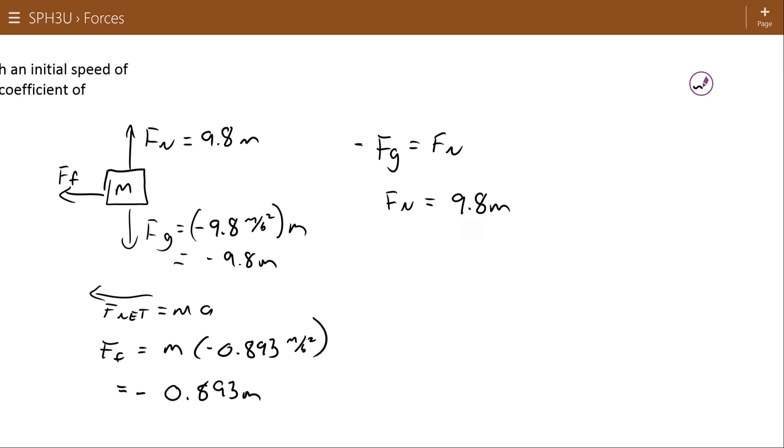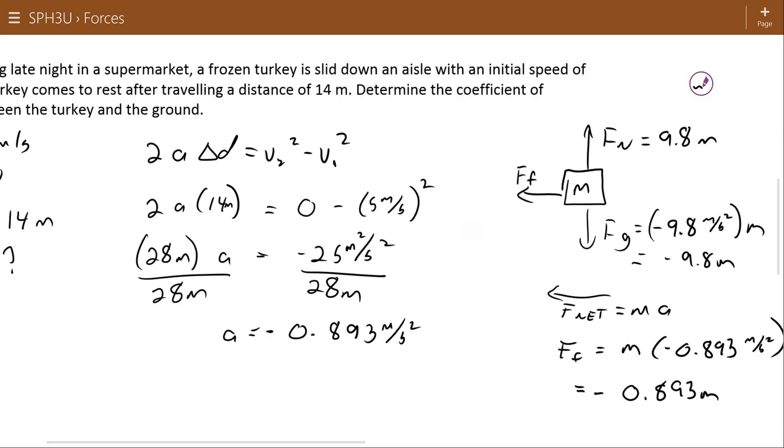With my normal force and my force of friction, I can now isolate for my coefficient of friction. Dividing both sides by 9.8, I get a coefficient of friction of 0.0911. Not surprising, that's why it took a whole 14 meters for this turkey to come to rest, because there's a very low coefficient of friction. This is a more reasonable result, or maybe a more plausible set of numbers to begin with.